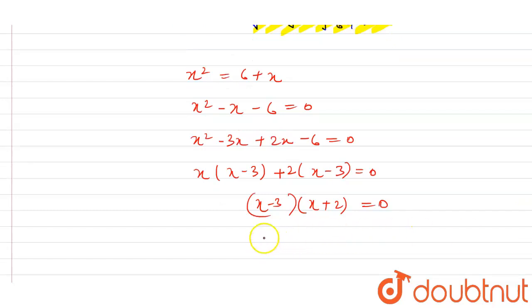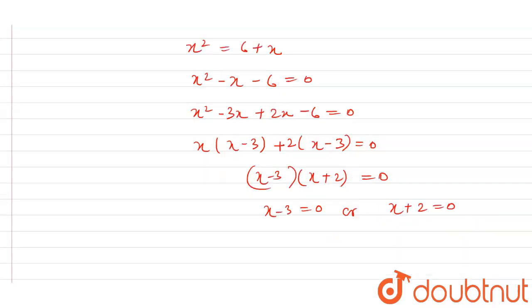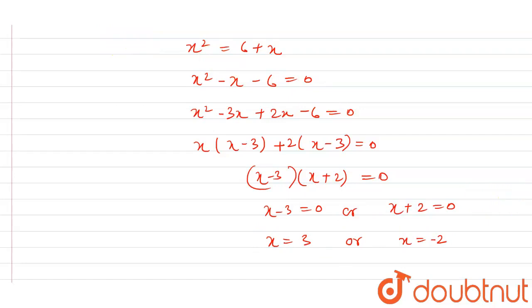So x - 3 = 0 gives x = 3, or x = -2. But x cannot equal -2 because the square root of a negative number is not defined. So x = 3 is our answer.